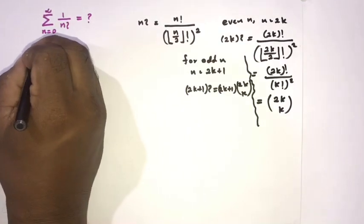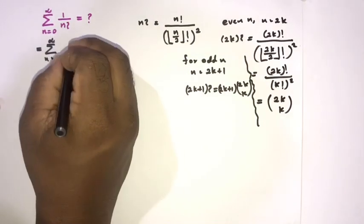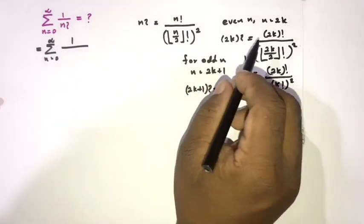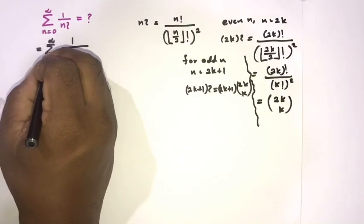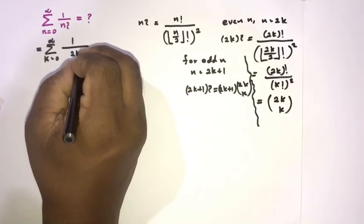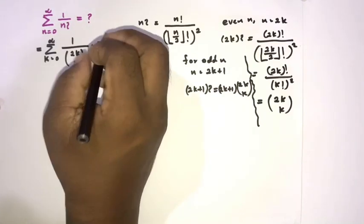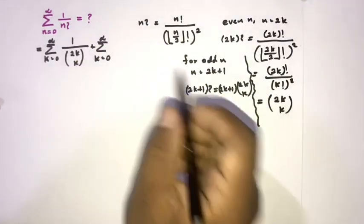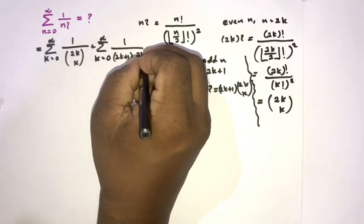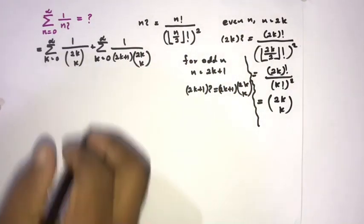We can write our infinite series as the sum from 0 to infinity of 1 over n swinging factorial. For even n, with k from 0 to infinity, we have 1 over 2k choose k. For odd n, again k from 0 to infinity, we have 1 over (2k plus 1) times 2k choose k. Now we can simplify.